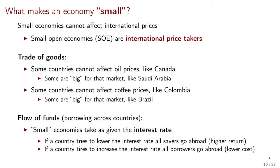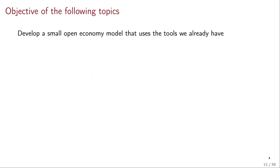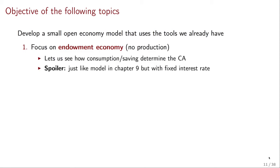Now we know what it means for an economy to be open and small. Moving forward, we want to develop a small open economy model using the tools we've been building in previous chapters to study the effects of different shocks. First, we'll focus on an endowment economy — an economy without production — which will let us see how consumption and savings determine the current account. This is linked to the previous video on how savings decisions influence the current account and trade flows. It will look exactly like the two-period consumption-saving model from chapter nine, but with fixed interest rates.